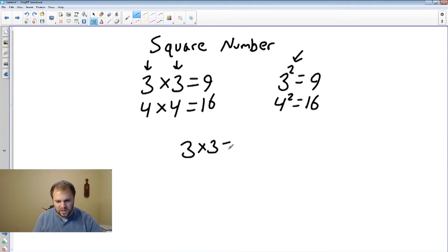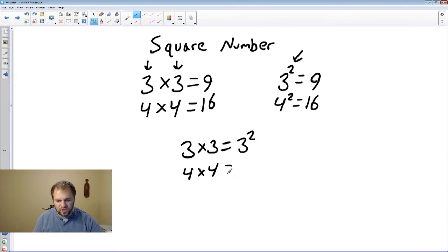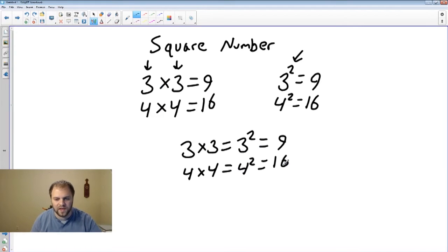3 times 3 equals 3 squared. 4 times 4 equals 4 squared, which both equal 9 and 16. So all this is the same: 3 times 3, 3 squared and 9, 4 times 4, 4 squared, 16. All of this is the same thing.